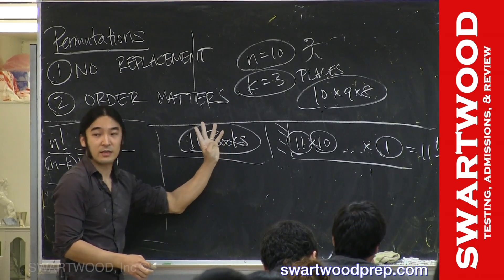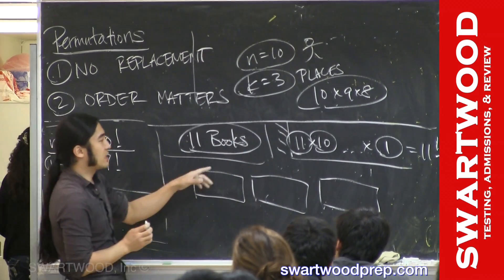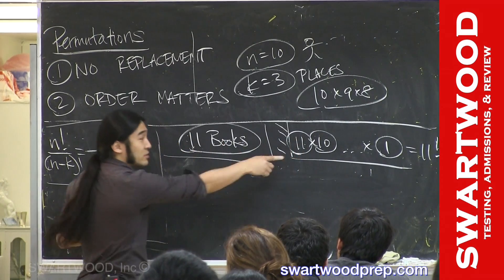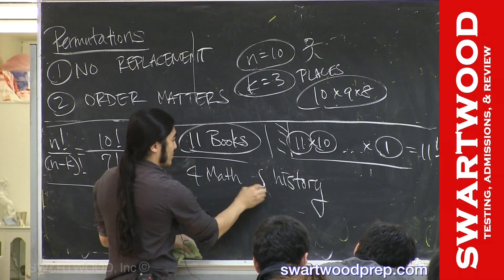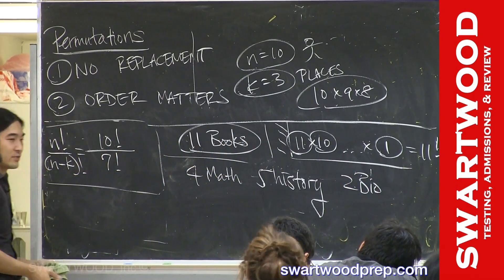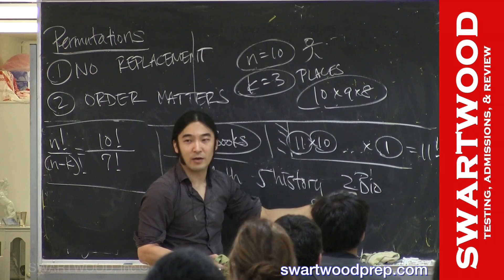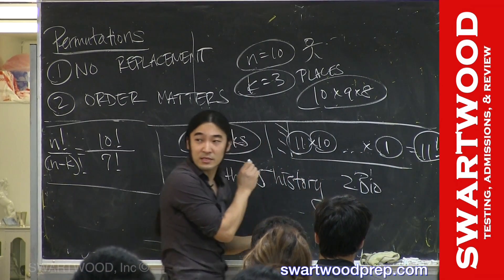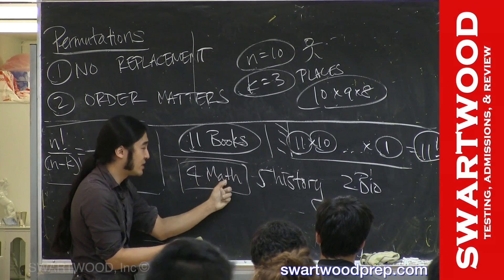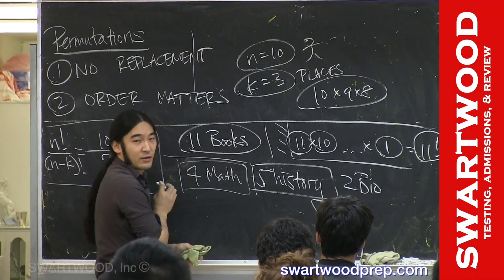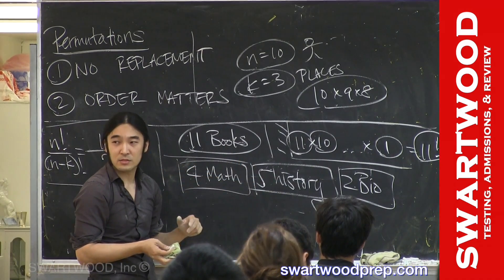Can we make it slightly harder? Same 11 books, but four of them are math books, five are history books, and two are bio books. If I just told you there are 11 books, there are still 11 factorial ways to arrange them. But here's the twist: I want you to keep all the math books together, all the history books together, and all the bio books together. No mixing — math must stay with math. With that restriction, how many ways can you arrange them?